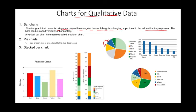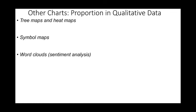Depending on what you are looking at, you could use the numbers or you could use percentages. But those are charts that are usually good for qualitative data. We can also use other charts to show the proportion in qualitative data, such as tree maps and heat maps, symbol maps, word clouds, which is sometimes called sentiment analysis.